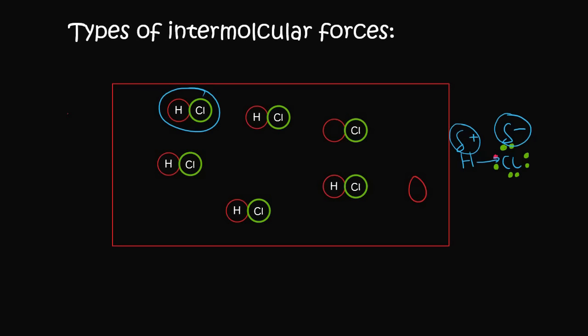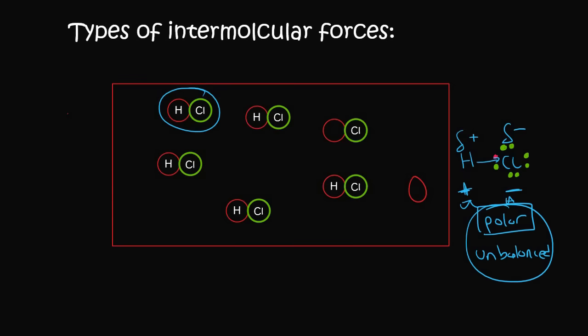With ionic bonding you would put a full plus and minus because the electrons move completely from one atom to the other. But with covalent bonding, they share. So we've got a more positive part and a more negative part of our molecule — a positive and a negative pole — and so this is a polar molecule. That word 'polar' is going to help us determine the name of this force.